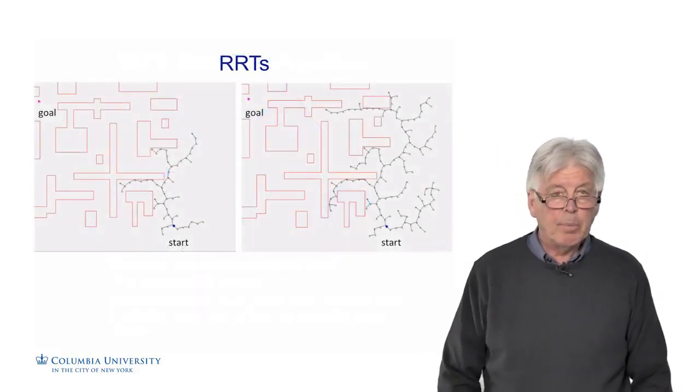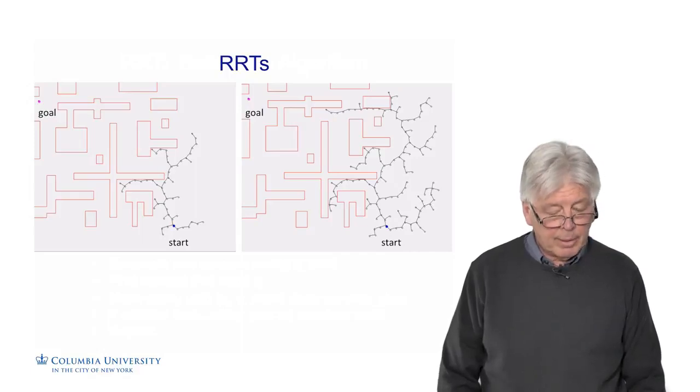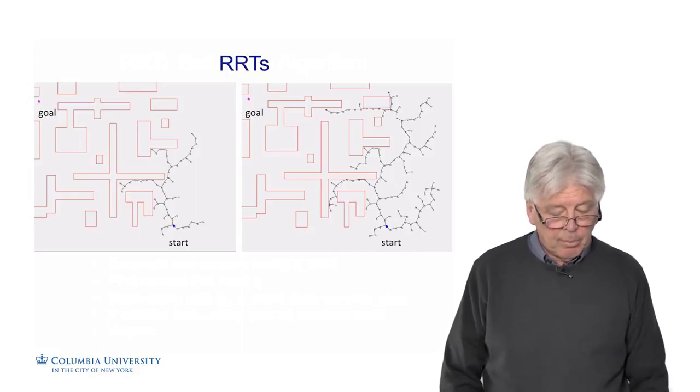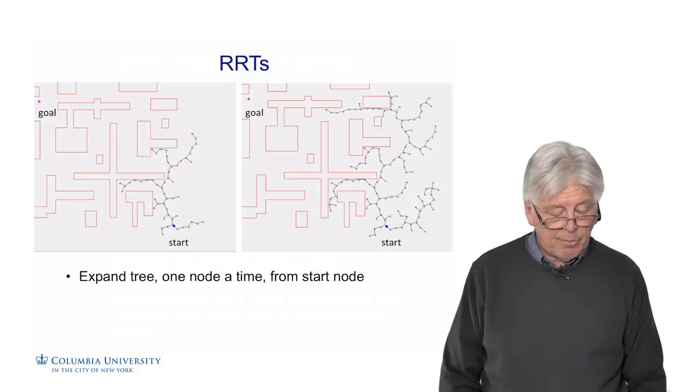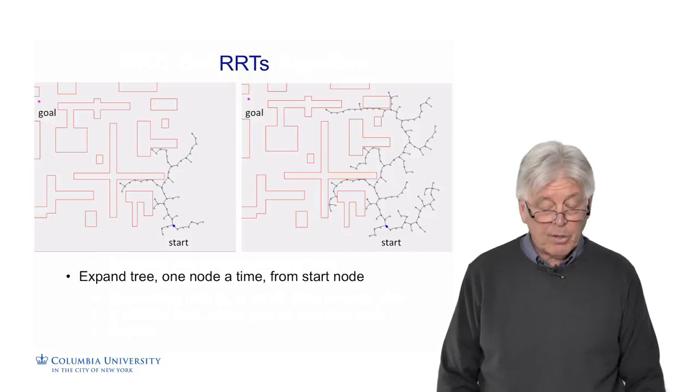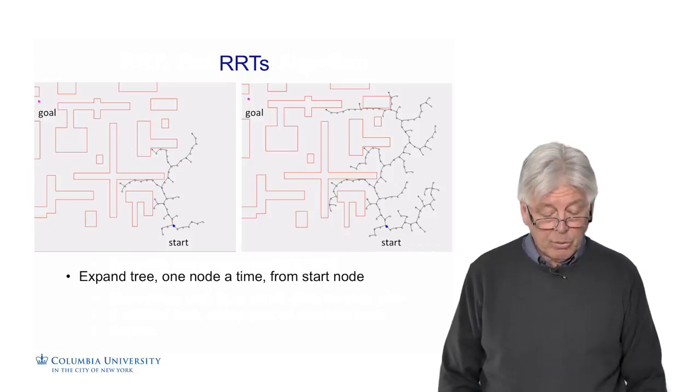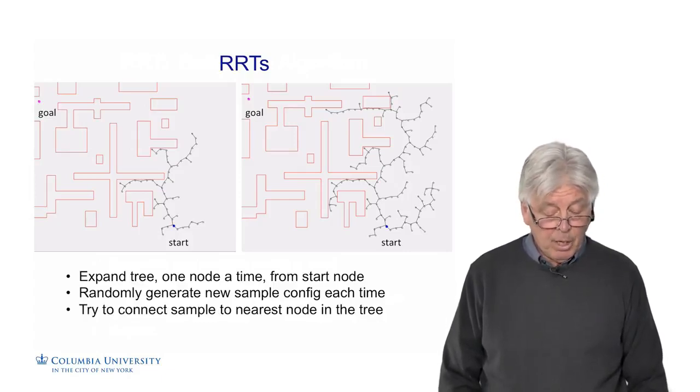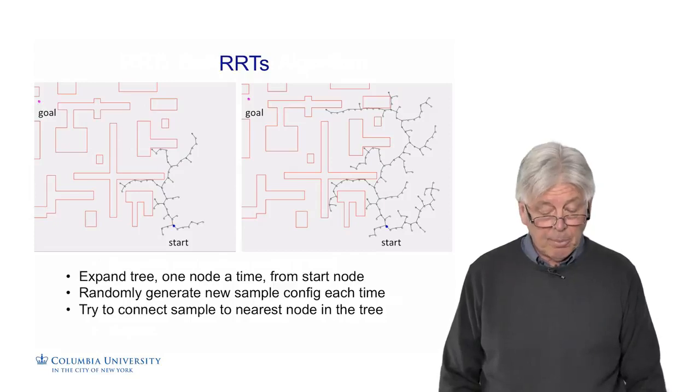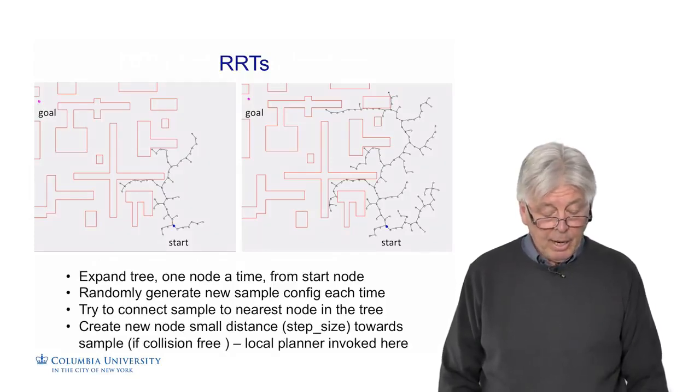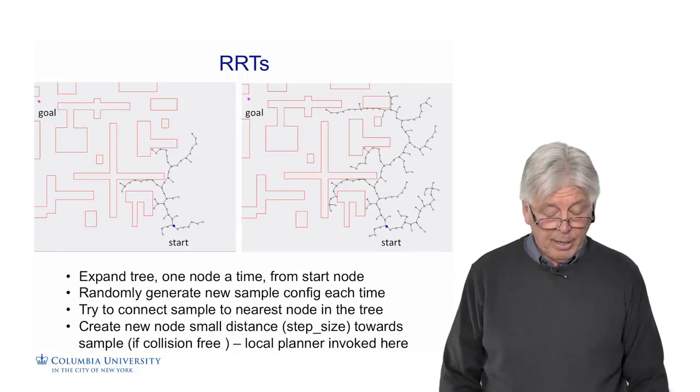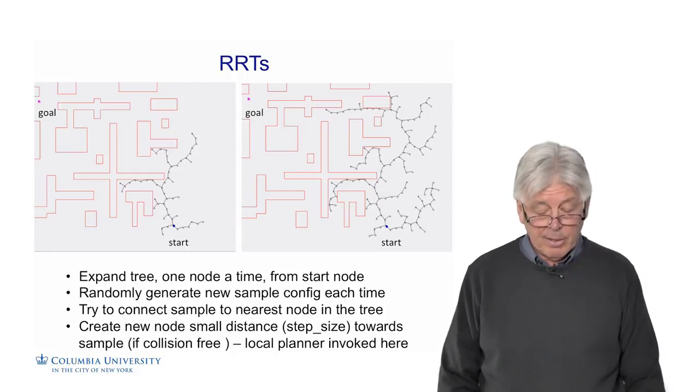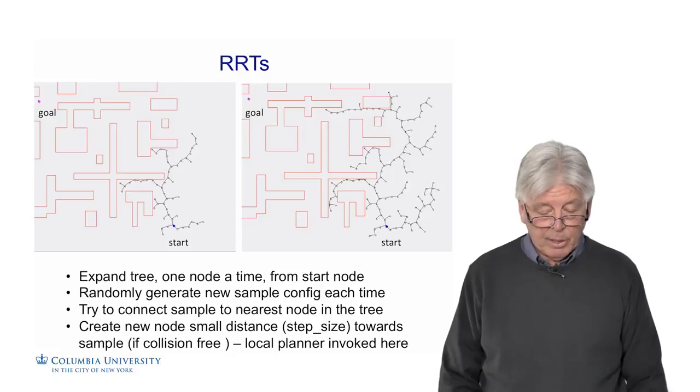Here is an example of an RRT growing in action. On the left, you can see we have the tree starting to be built. We expand the tree one node at a time from the start node, and it continues to grow. We randomly generate a new sample configuration each time. We try to connect the sample to the nearest node in the tree, and we go out to step size once we connect. We create the new node, and the local planner is invoked here to find this new node that's a step size out. On the right, it continues to grow towards the goal.